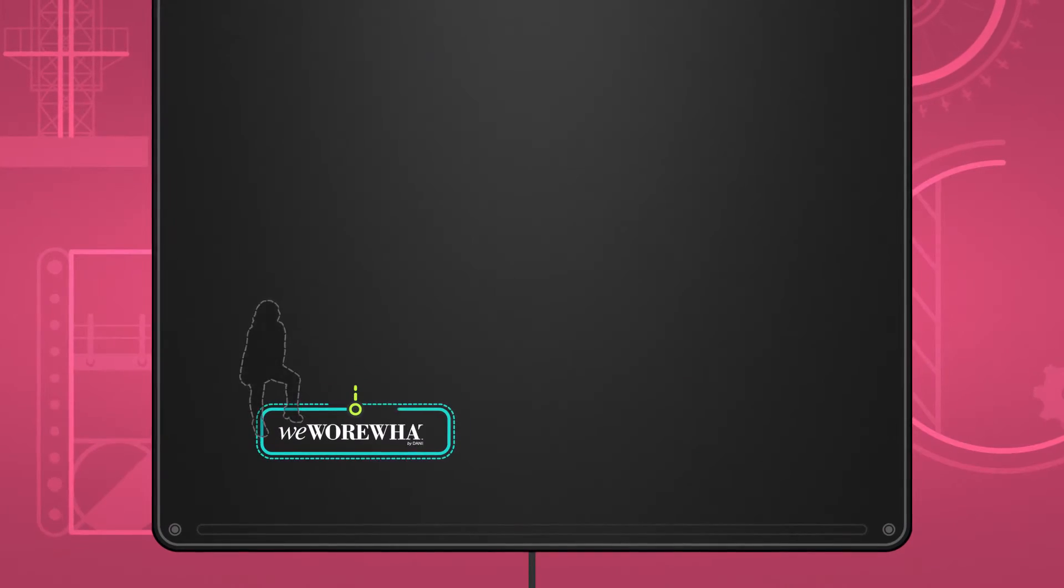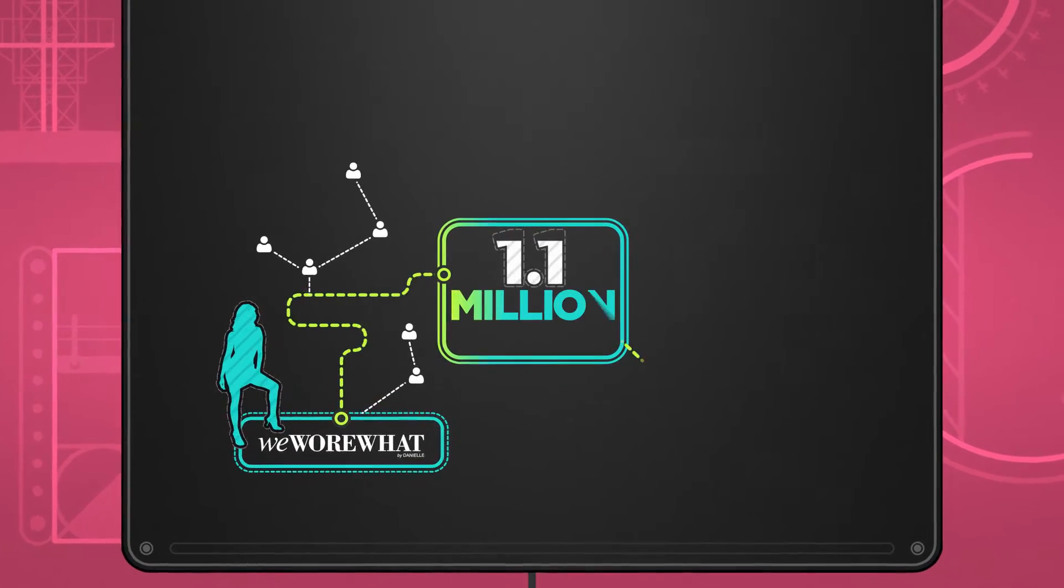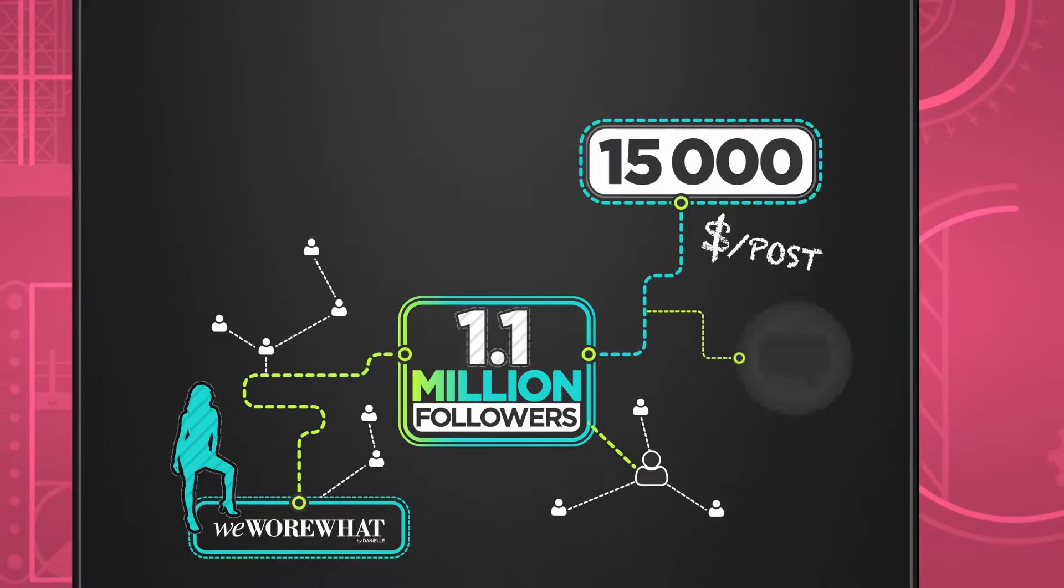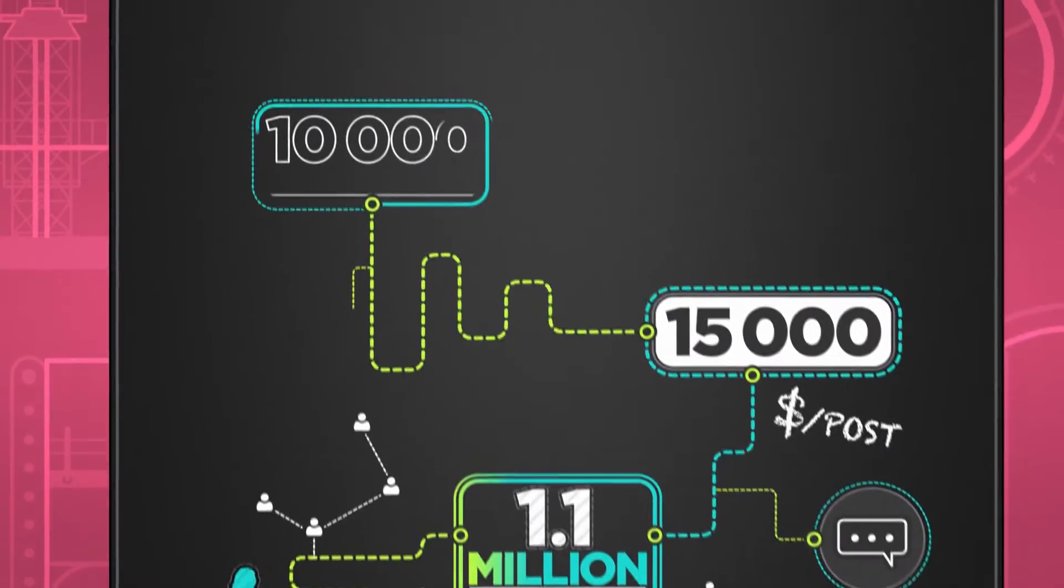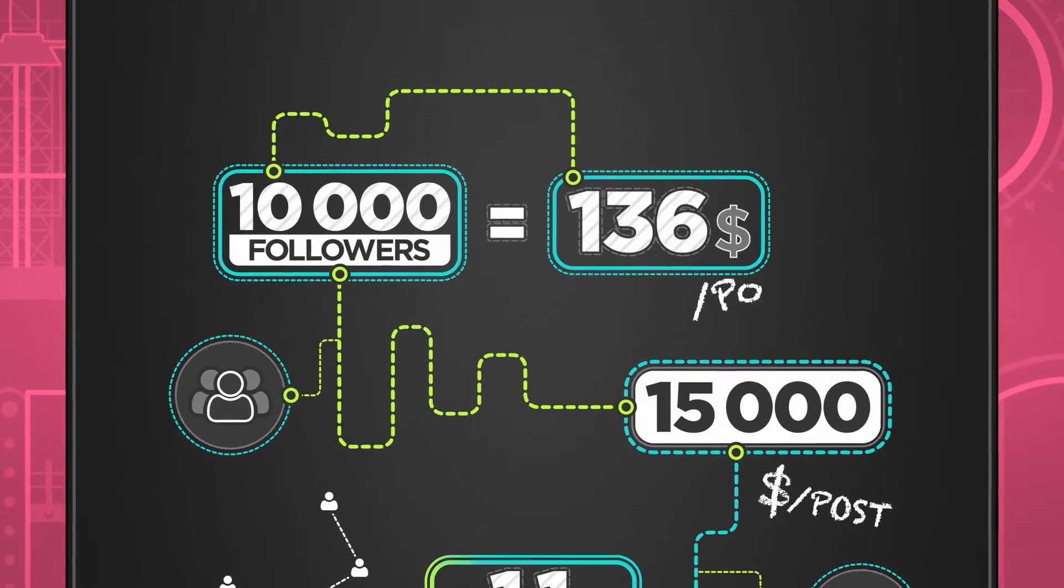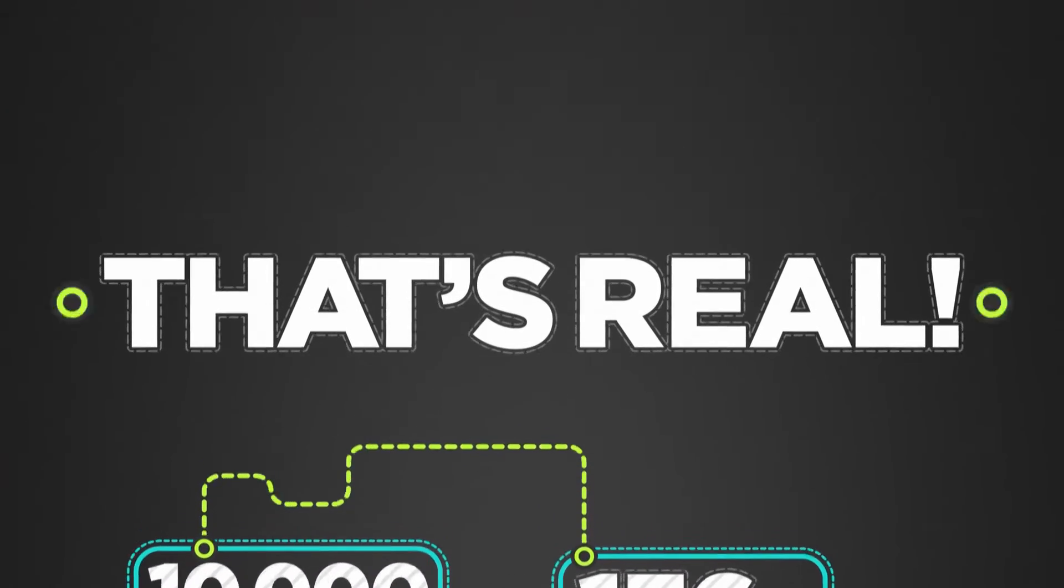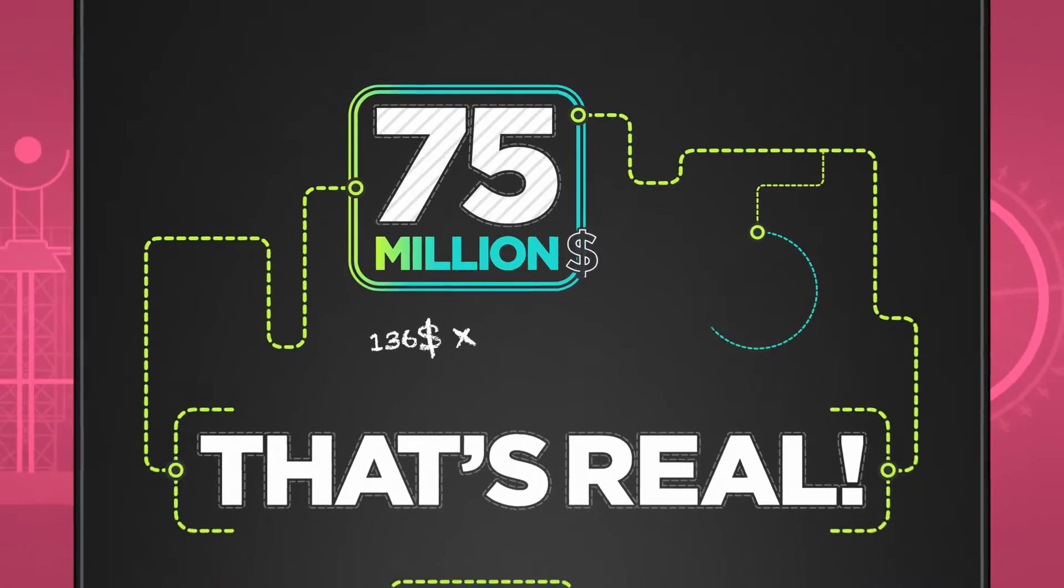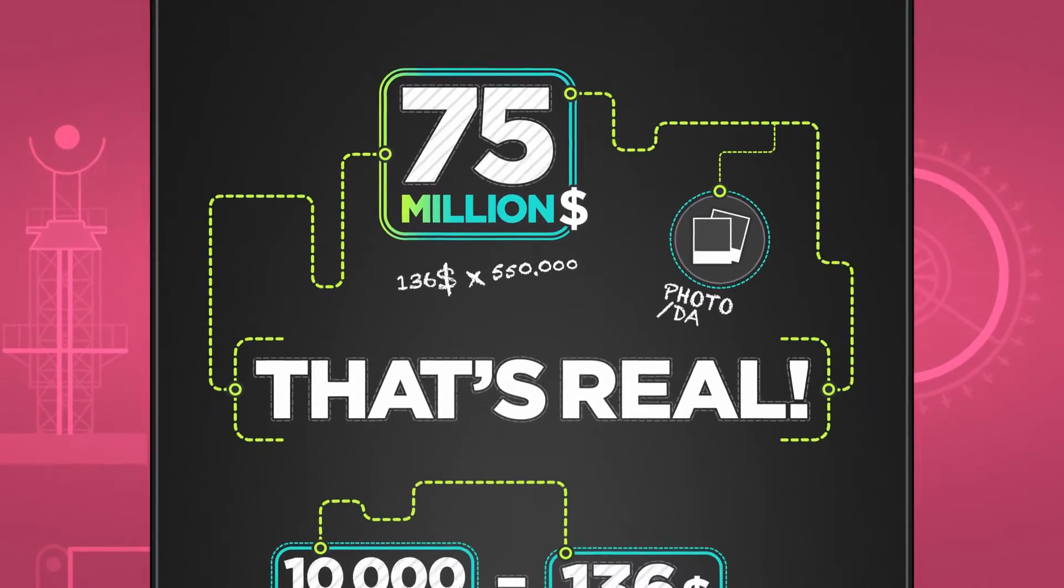Taking our WeWoreWhat example as the basis of a rough estimation, if 1.1 million followers worth $15,000 for one post, then a post by a user with 10,000 followers would be worth around $136. That's real. That means the value of the daily market would be $75 million for the photos posted every day. Wow.